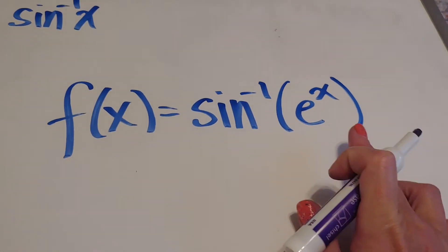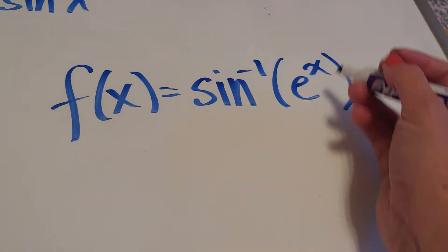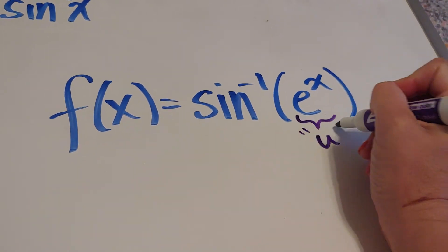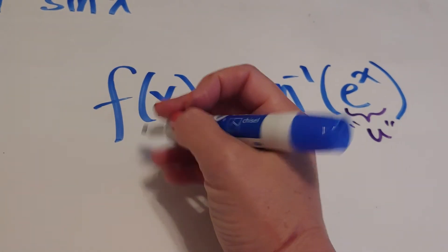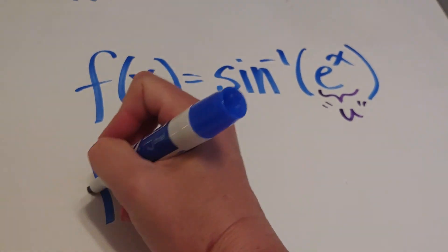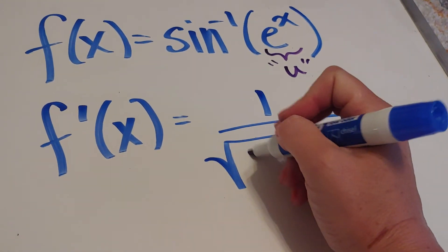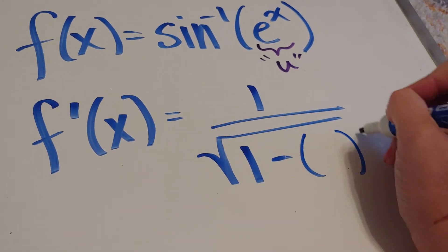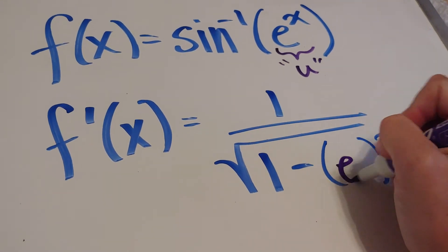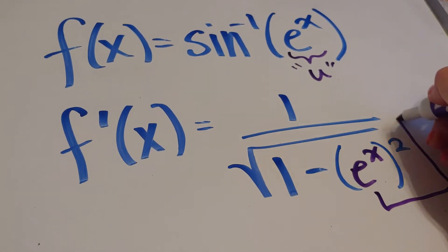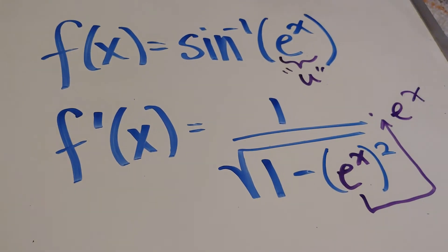What if I had, instead, e to the x on the inside? So, this is going to be my u in the formula that I had in my notes and in a previous video. Here, I'm going to go f prime of x equals 1 over the square root of 1 minus u squared. U is e to the x. And then, I'm going to multiply by chain rule by the derivative of e to the x, which is e to the x.